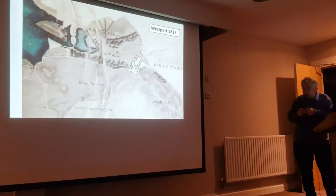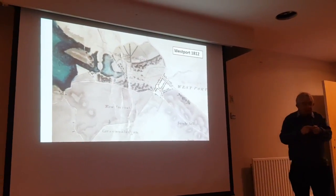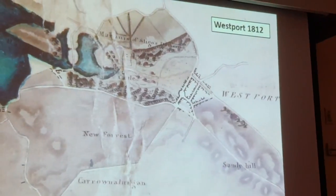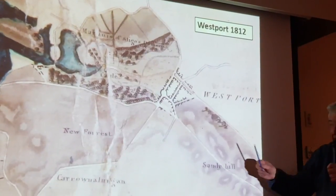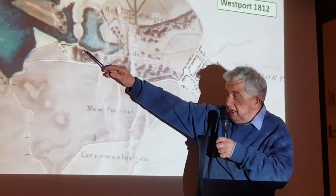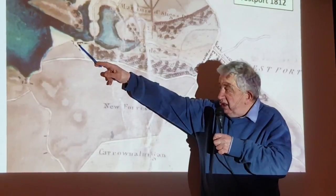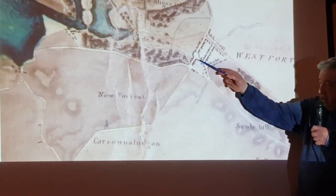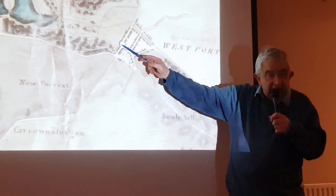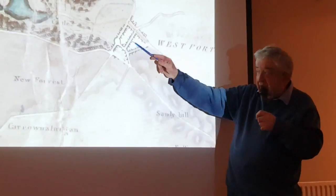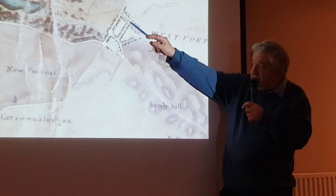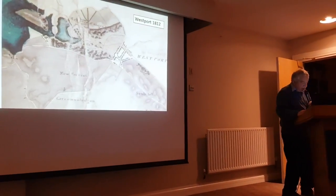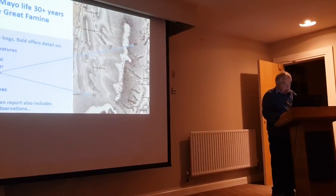This is Westport — I think this might be one of the earlier maps of Westport, definitely not the earliest, but it's Westport in 1812. Here's where we are today. Down here is the key — the domain, the castle — and then you can see the octagon here, and the idea of a well-planned town. The Mall is here. It's quite an interesting early representation of Westport.